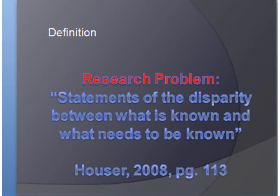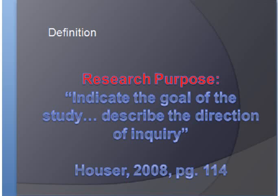Let's look at some definitions first. Research problem: Hauser states it's the statement of disparity between what you know and what needs to be known, and we discover this through investigation of a literature review. You develop a research problem statement that defines what we know, and then you say, thus, this is what we don't know yet. Then you move into a research purpose — since we don't know this about the problem, here's the purpose of this study, your description of the direction of your inquiry.